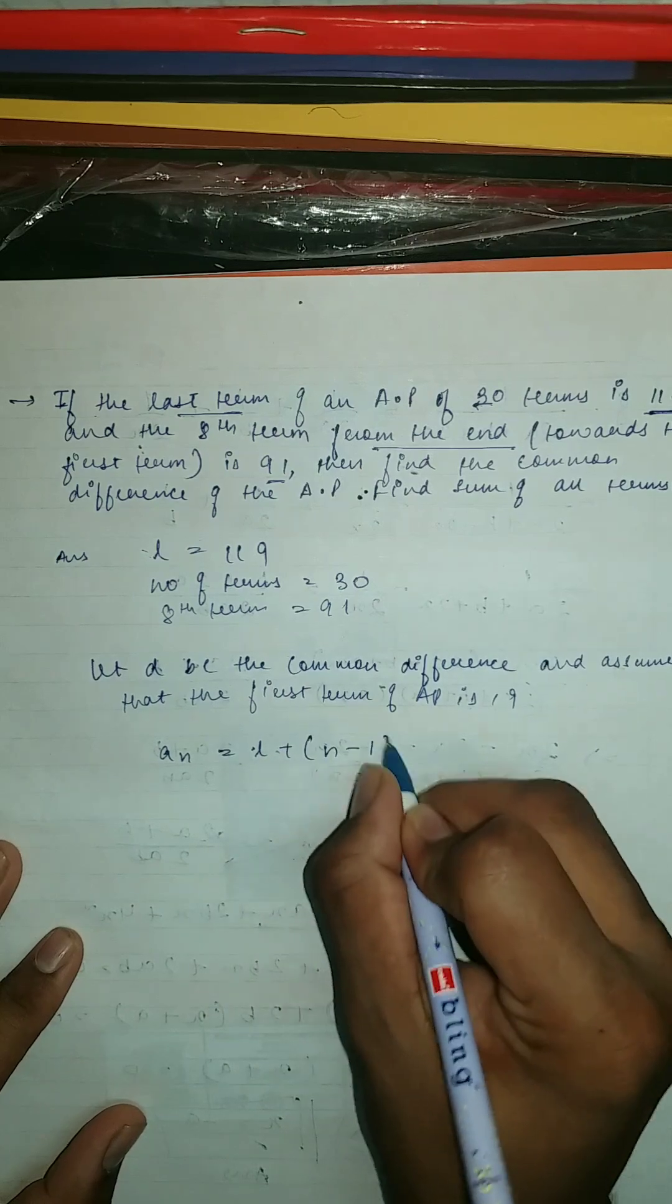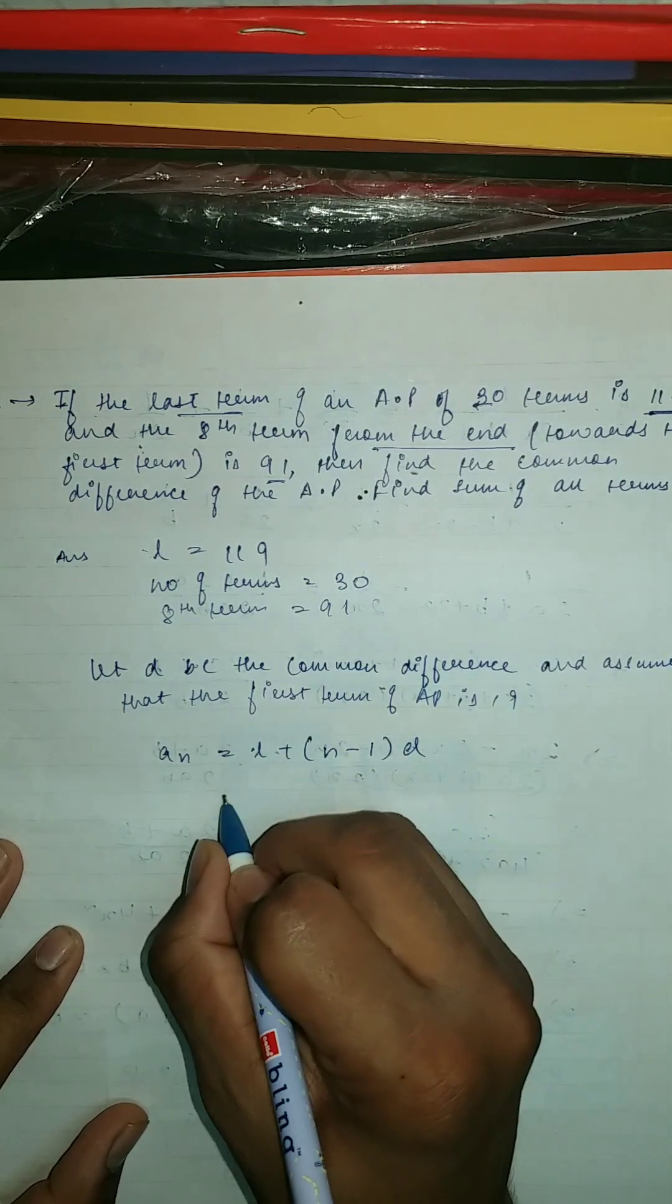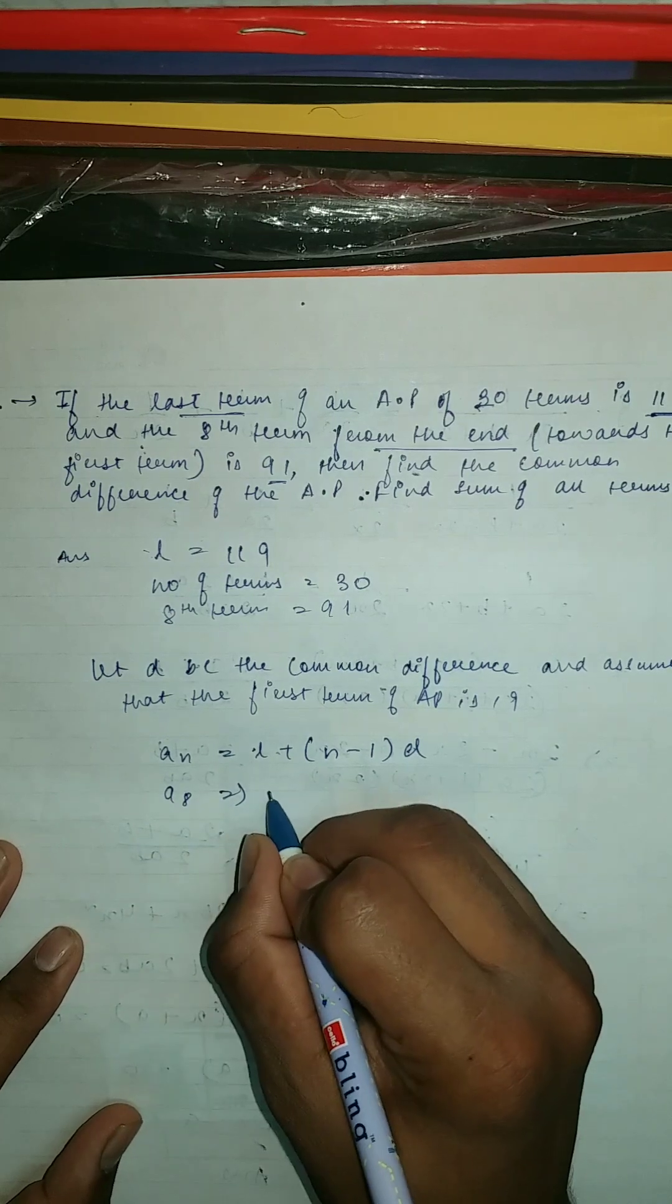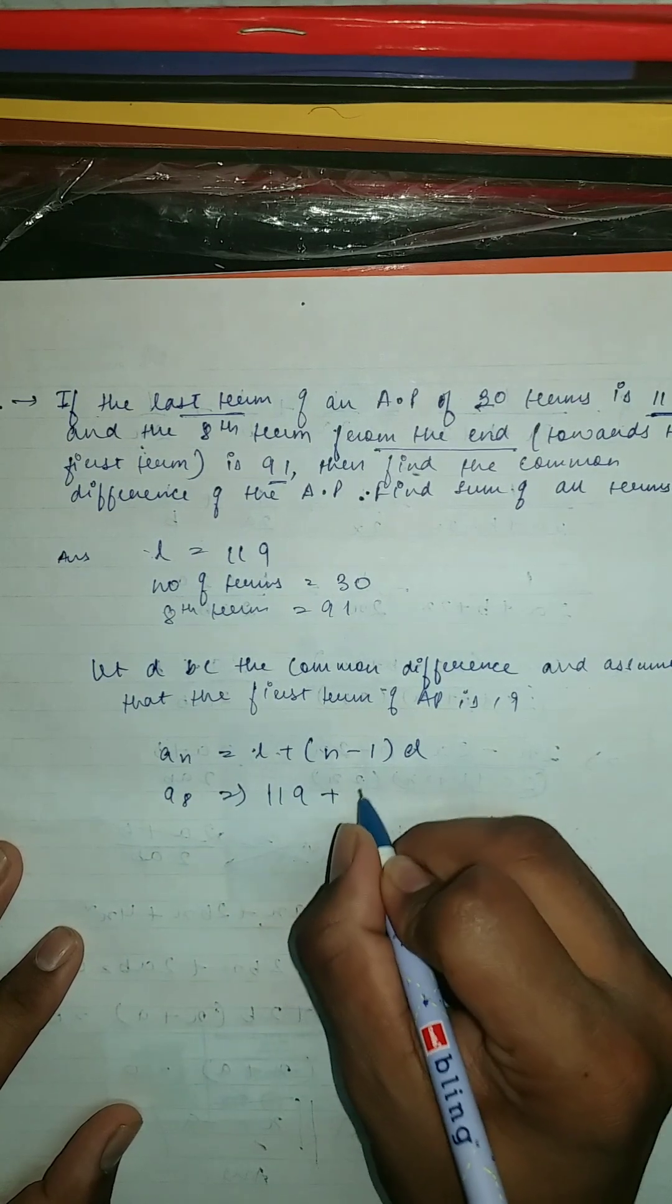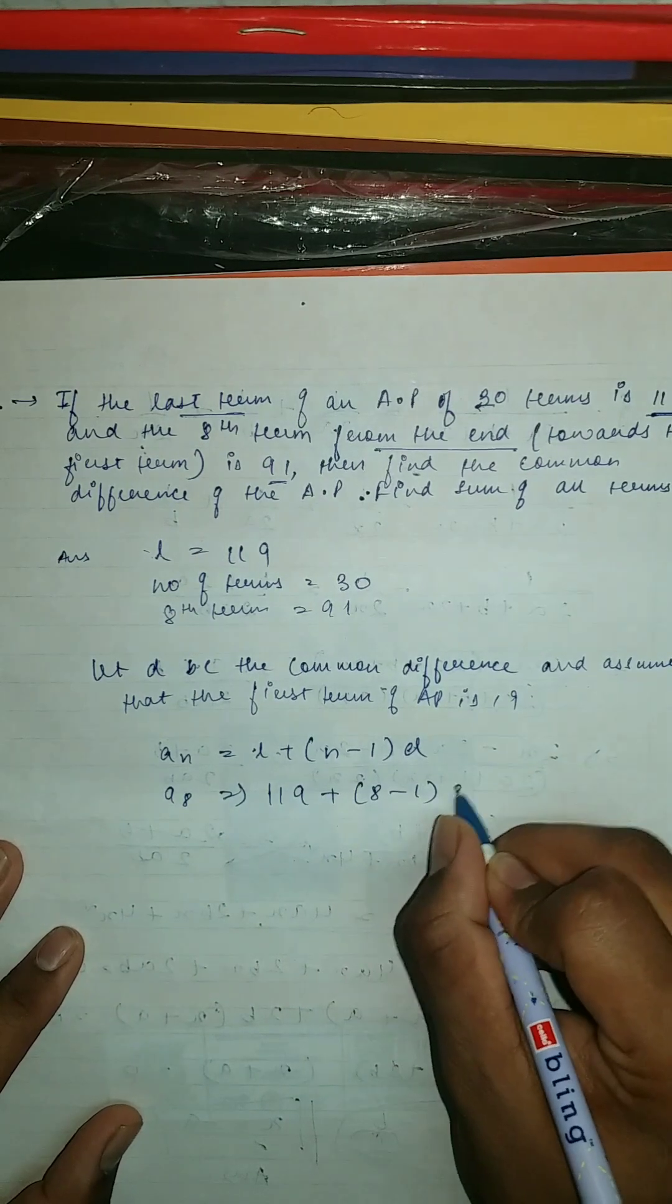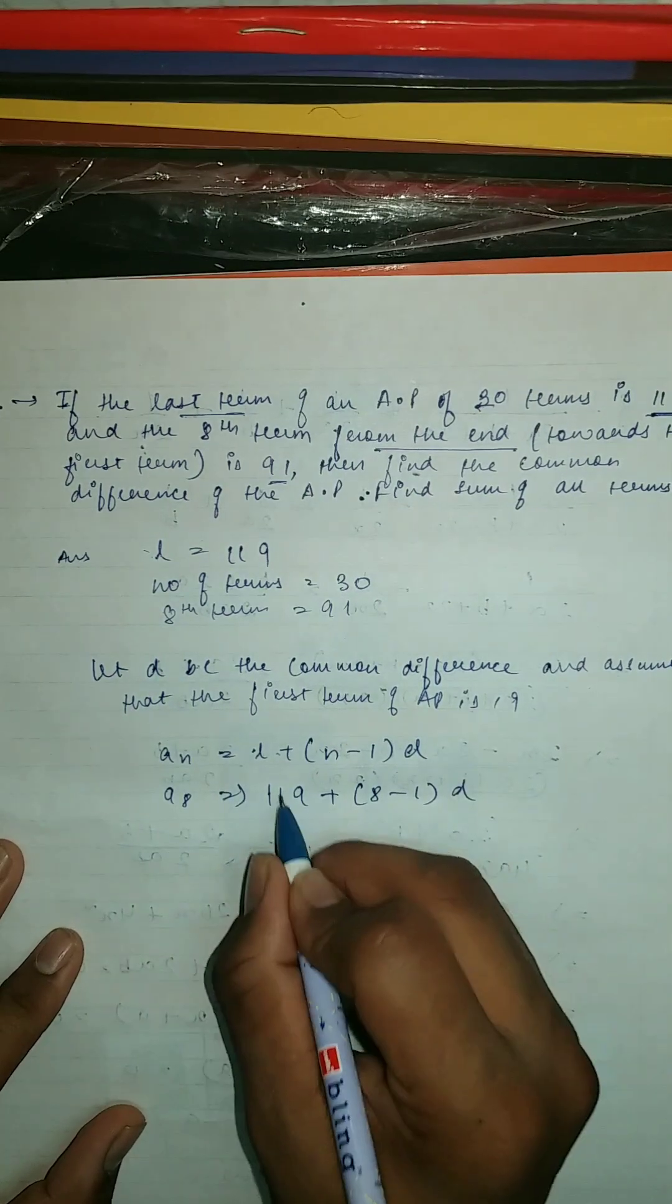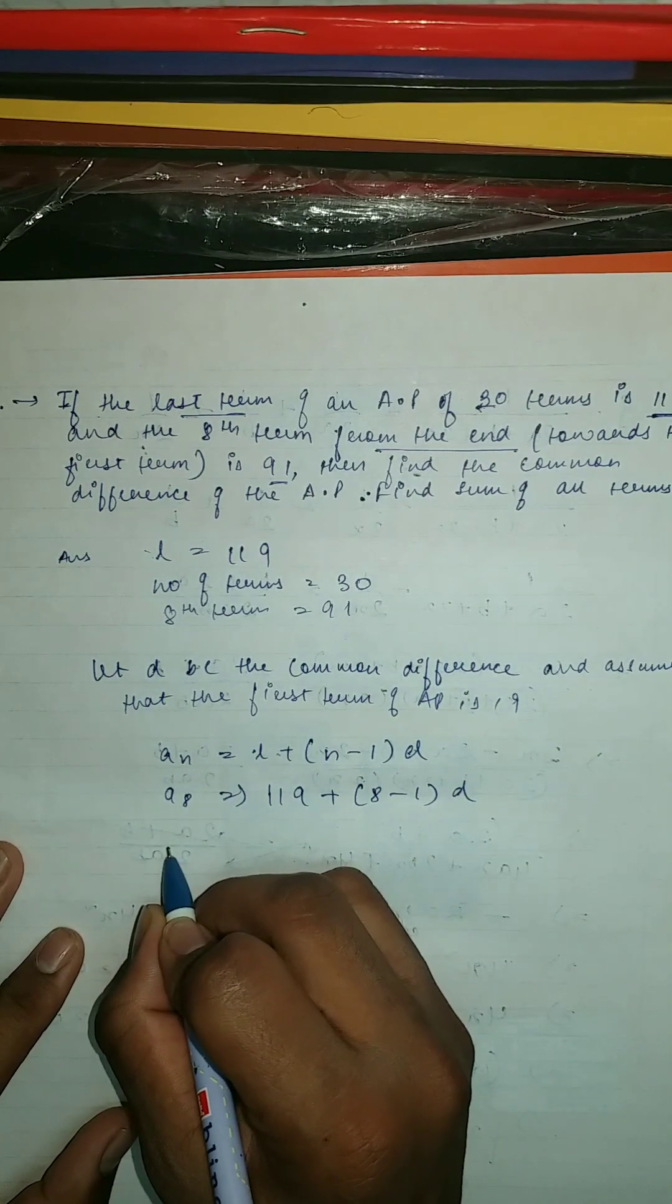Which is equal to A8 equal to 119 plus (8-1)D. So this should be 91 equal to 119 plus 7D.